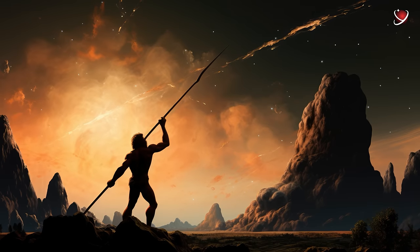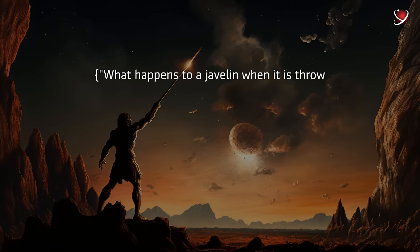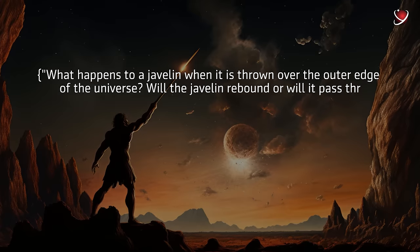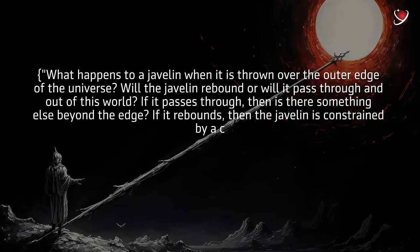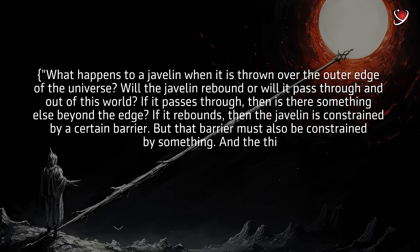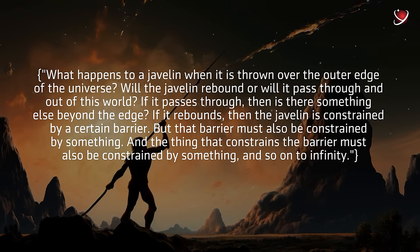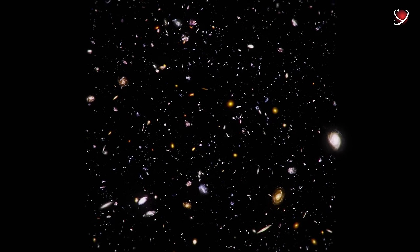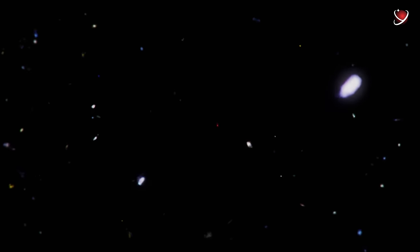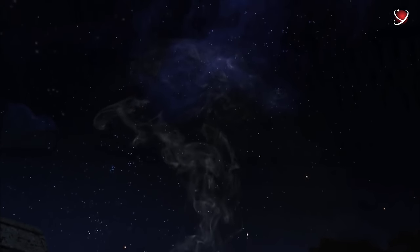The javelin argument is an ancient logical argument put forward by the Greek philosopher Archytas to prove that the universe is supposed to be infinite. It goes as follows. What happens to a javelin when it is thrown over the outer edge of the universe? Will the javelin rebound? Or will it pass through and out of this world? If it passes through, then is there something else beyond the edge? If it rebounds, then the javelin is constrained by a certain barrier. But that barrier must also be constrained by something. And the thing that constrains the barrier must also be constrained by something. And so on to infinity. Hence, the universe is infinite. For more than 2,000 years, the most talented minds worked on this riddle. And it is safe to say that the riddle of Archytas has largely influenced the history of cosmology. However, what the ancients didn't realize was the possibility that the universe could be infinite and yet have edges.